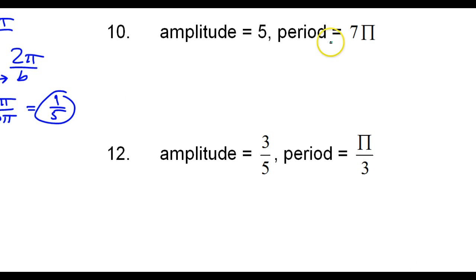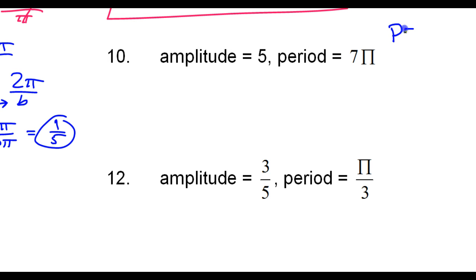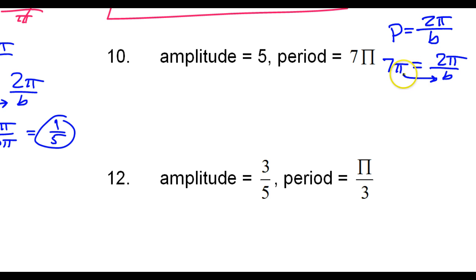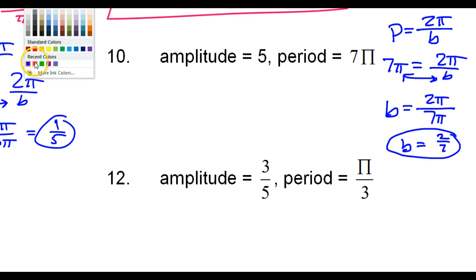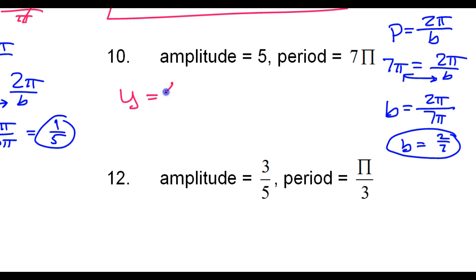Number 10. The period is 2 pi over b. The period is 7 pi, so 7 pi is equal to 2 pi over b. Reversing gives b equal to 2 pi over 7 pi. The pi's cancel, so b equals 2 sevenths. The equation is y equals 5 sine of 2 sevenths x.